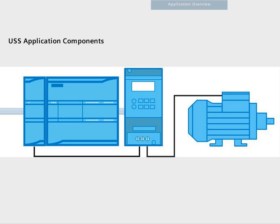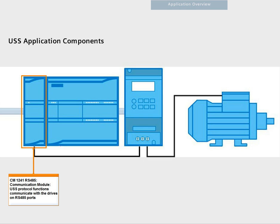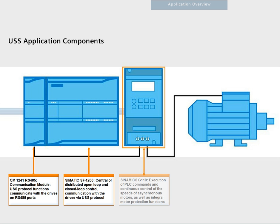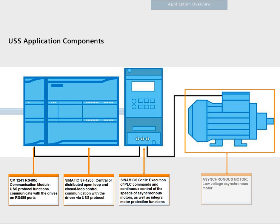Chapter 1 – Application Overview. The following hardware is required for controlling the Universal Serial Interface, called USS Protocol: an RS-485 communication module, an S7-1200 controller, a frequency converter — for example, Sinamics G110 — and an asynchronous motor.